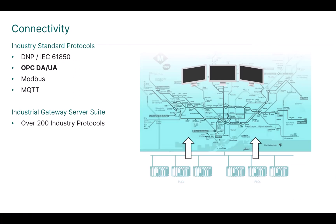Simplicity provides connectivity to all of the important protocols you'll need to bring data into the SCADA system — from power protocols like DNP and IEC 61850, to communication standard support for OPC UA and DA, Modbus Classic, and MQTT. Multiple other industry protocols specific to the types of PLCs and devices you'll want to communicate with are also available.